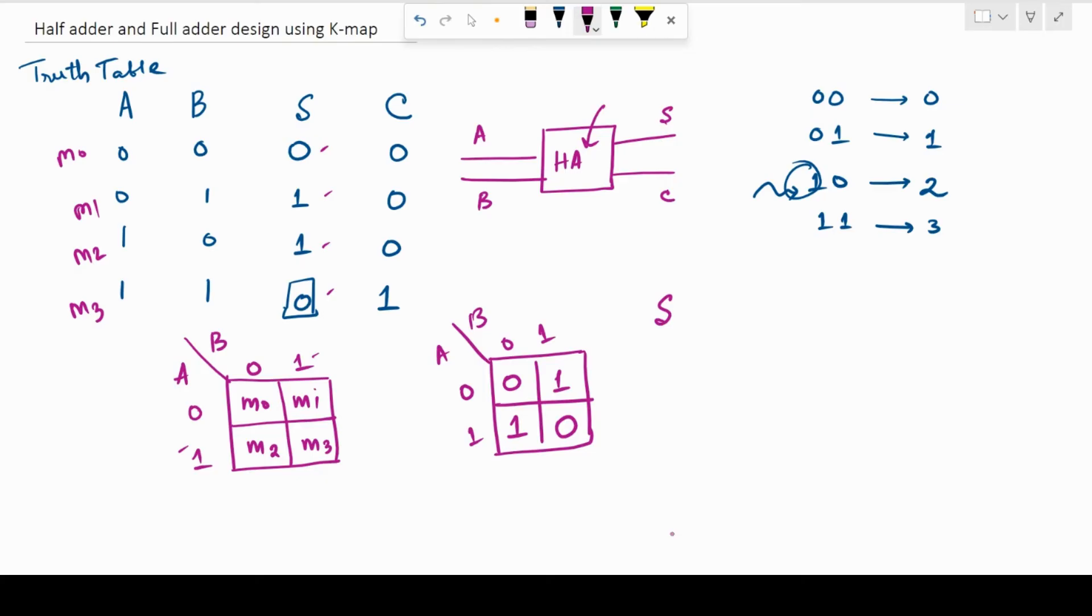Now, in this case, we see that there can't be any grouping that can be done. Otherwise, we can use the absorption law to group adjacent cells and get a very simplified expression. With the upcoming examples, I'll explain how that can be done.